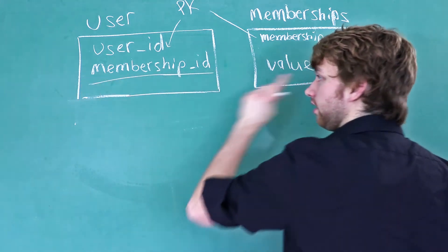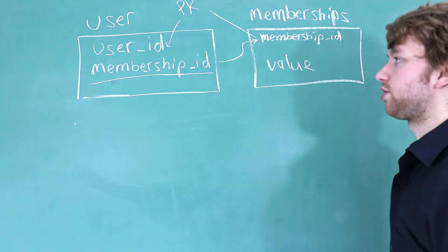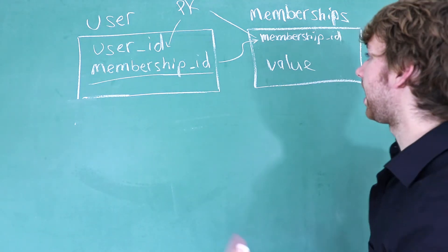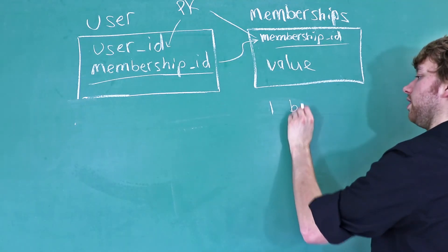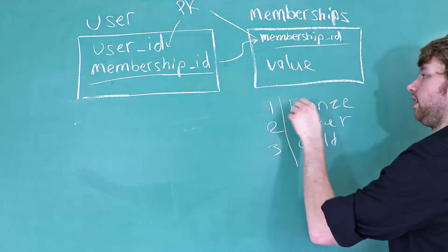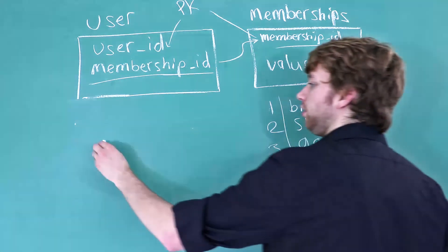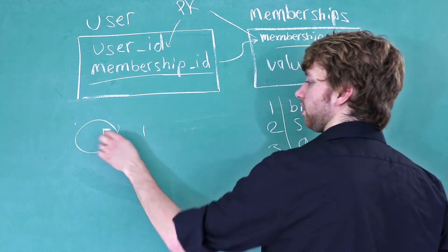This here is a foreign key that references this primary key. And essentially what that means is every single value for this membership ID column has to be a value from this column over here. The membership rows would look something like this, where we have the ID and we have the value of whatever that ID is. Then over here you would have one user with a membership ID. So the user with the ID of 1 references the bronze.